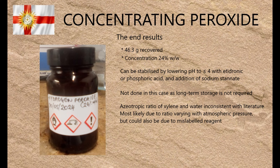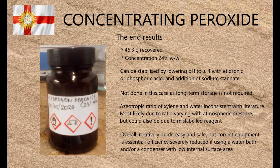One odd thing I noticed is that the actual azeotropic ratio of xylene to water was closer to 3:1 than the 3:2 claimed in the literature. I don't know whether this is due to the ratio varying with atmospheric pressure or due to my xylene being mislabelled — it claims to be both xylene and ethyl benzene, which are not the same thing. Xylene is 1,2-, 1,3-, or 1,4-dimethyl benzene, usually a mixture. But in any case I got the desired results so it didn't really matter.